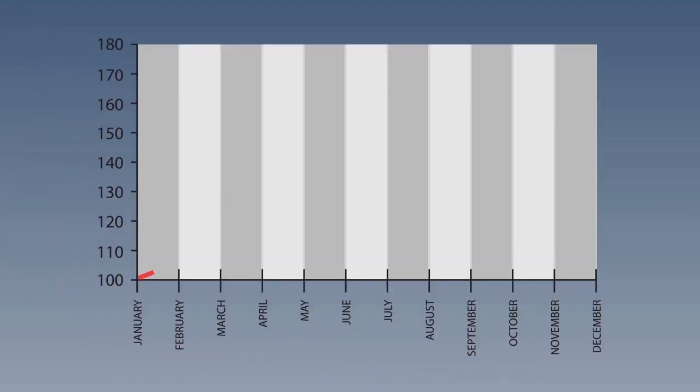Now, you can see that if we used our initial idea of just multiplying 5% by the number of months, we would get a different answer, because we would be adding 5 each month. So instead of 110.25 in March, we would get 110. And in April, instead of 115.7625, we would get 115. These may seem like small differences, but they can add up over time.